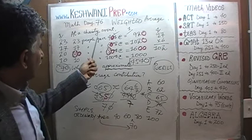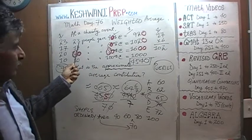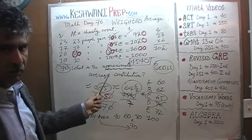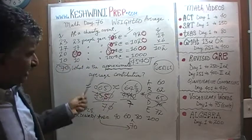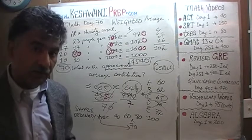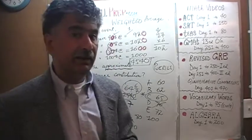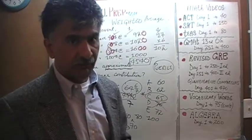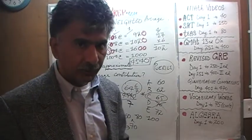The weighted average, once we consider all the weights, the fact that 23 people gave $40, not equal number of people gave this amount, the weights are different. Once we take the weighted average, it turns out to be approximately 65. I'll see you tomorrow, okay? Bye now.